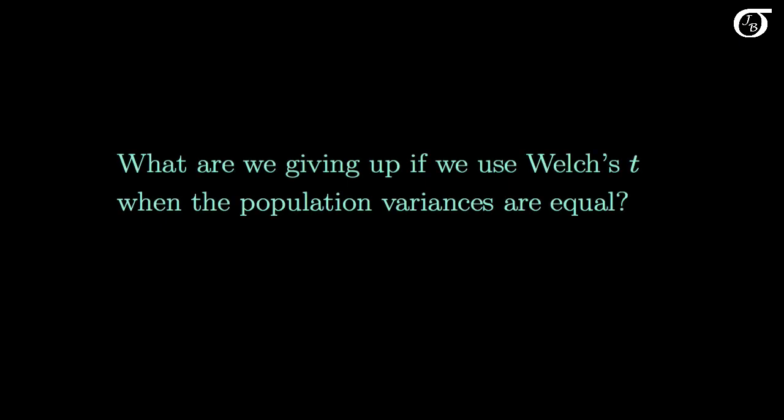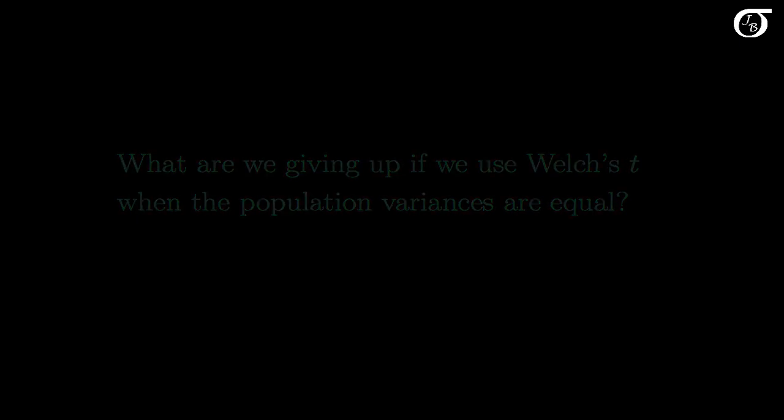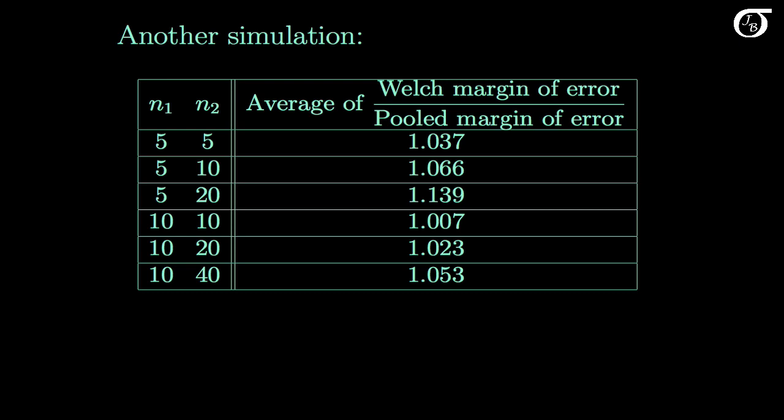Another natural question is: what are we giving up if we use Welch's t when the population variances are equal? If the population variances are in fact equal, then the pooled variance procedure is the best procedure to use — but what are we giving up if we use Welch's procedure instead? To answer that, let's look at another simulation where the assumptions of the pooled variance t procedure are perfectly justified: independent random samples from normally distributed populations with equal population standard deviations.